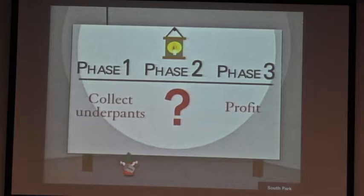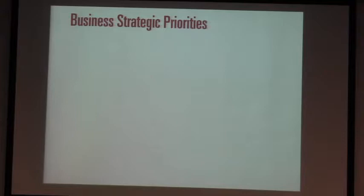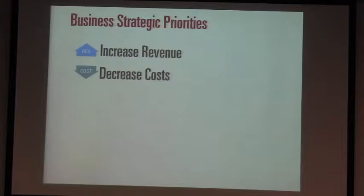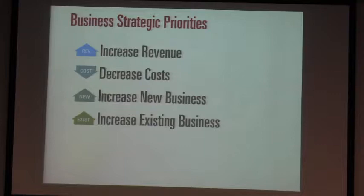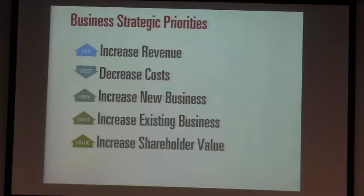If you go to a business school, they'll give you a slightly different model. There are five priorities a business has to have from a strategic standpoint: you have to be able to increase revenue, or decrease costs, or get new customers and increase market share, or get more money from existing customers — increasing your business share — or increase the long-term value of your business to get more investment, which is shareholder value. It turns out these are the only five things that business people worry about.